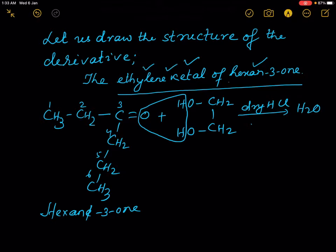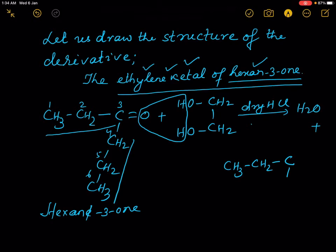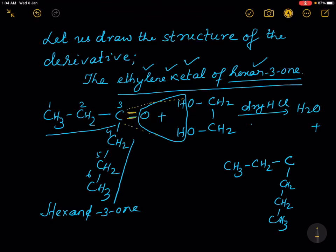The ethylene ketal of hexane-3-one is formed along with water. The structure is: CH3-CH2-C, connected to CH2-CH2-CH3, and these two bonds are connected to the oxygen atoms of ethylene glycol as shown. There are two bonds with the two oxygen atoms of ethylene glycol. The compound obtained is known as the ethylene ketal of hexane-3-one.